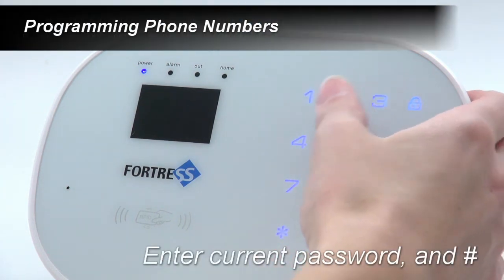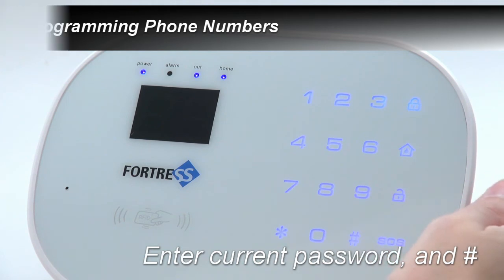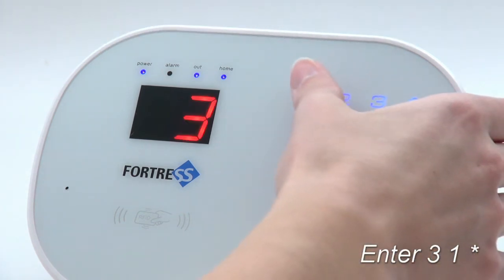To program in the first phone number the system will call, first enter programming mode. Next, enter 31 star.